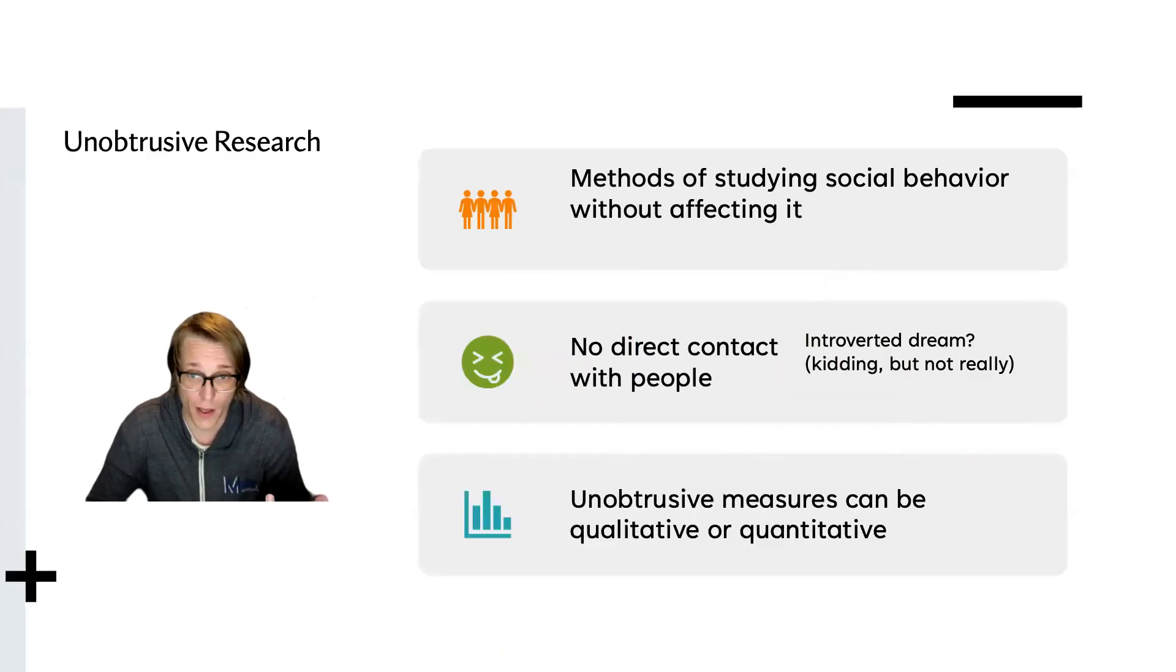A strength of content analysis and any unobtrusive research method is that a researcher seldomly has effect on any subject being studied. This method is also reliable and is easy to repeat any portion of the study. If you miss something the first time, you can go back to get the content and look for more information, which is very different from survey research with only one shot at collecting the information.